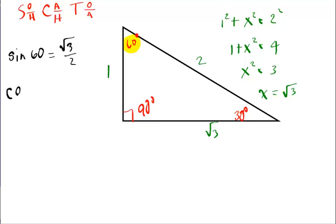Well, what's the cosine of 60? Again, staying with the 60. Staying with 60 degrees there. Now, we're looking at the adjacent over the hypotenuse. It's 1 half.